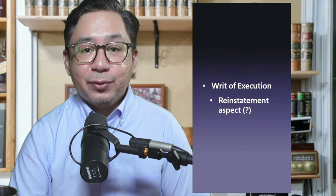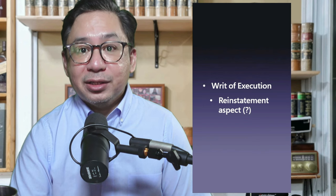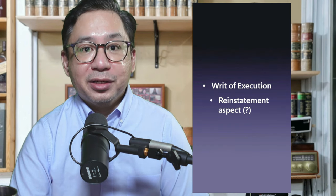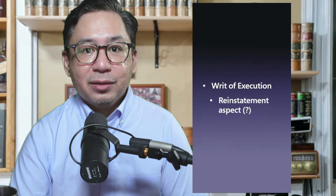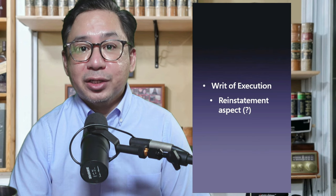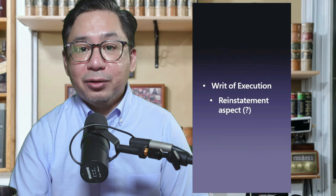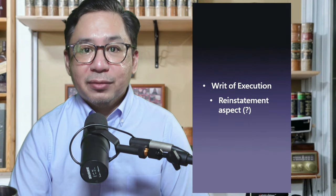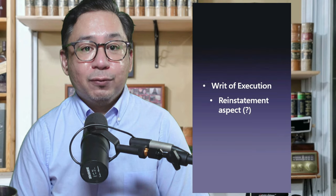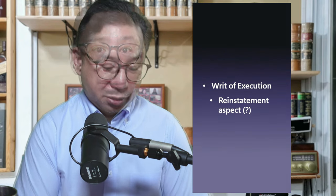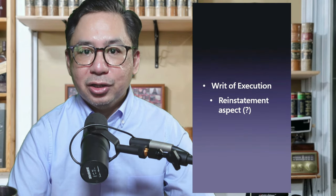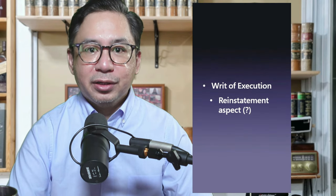In other words, the employer must reinstate the employee with or without a writ of execution. What if the employer does not voluntarily comply with the reinstatement order? That's the time when the Office of the Labor Arbiter, under the rules, shall immediately issue a writ of execution.